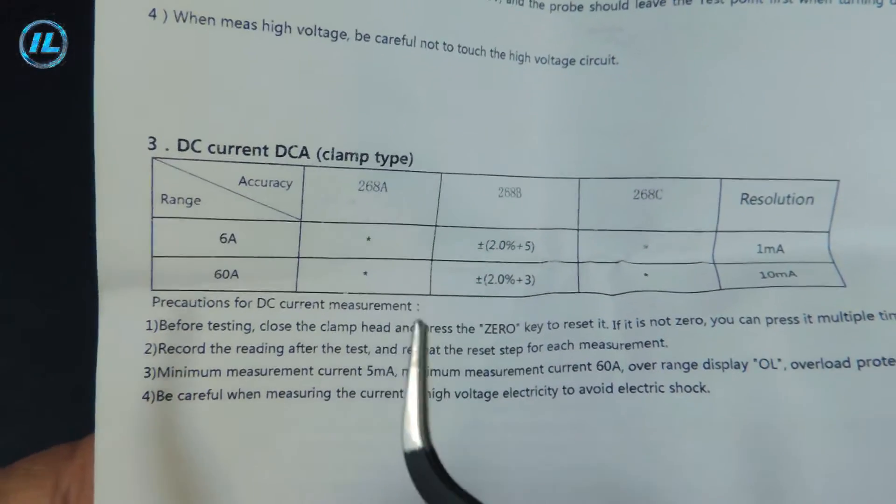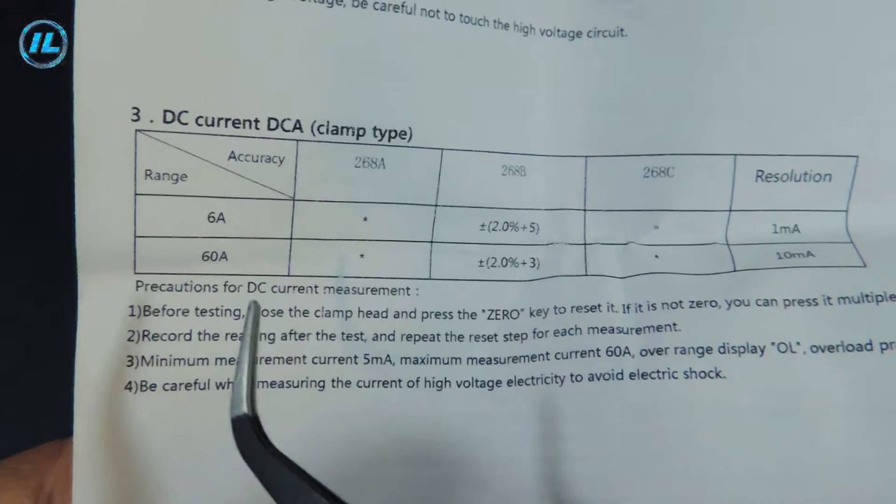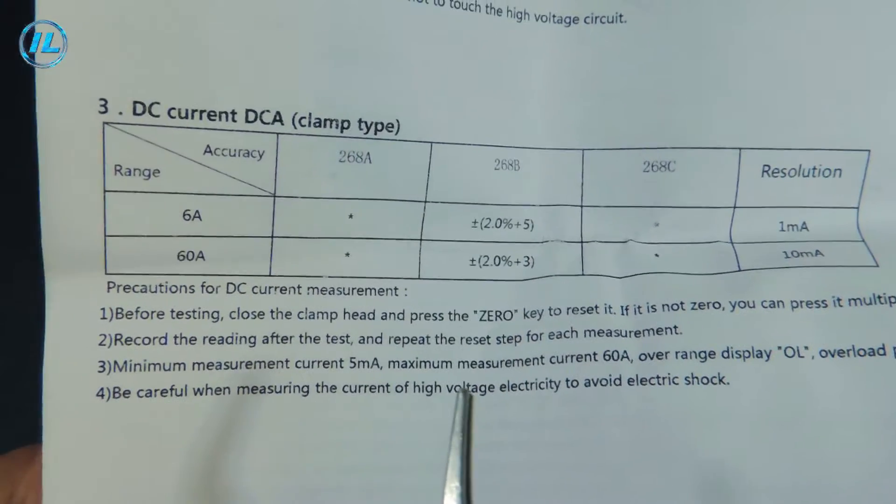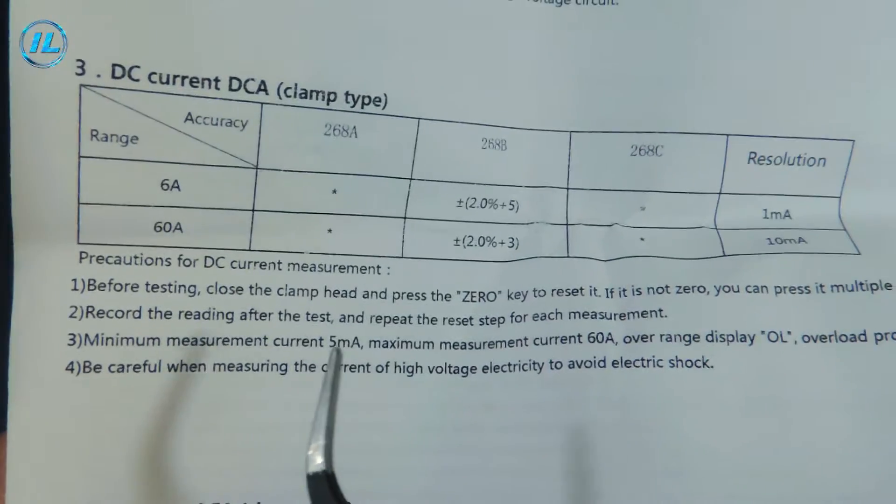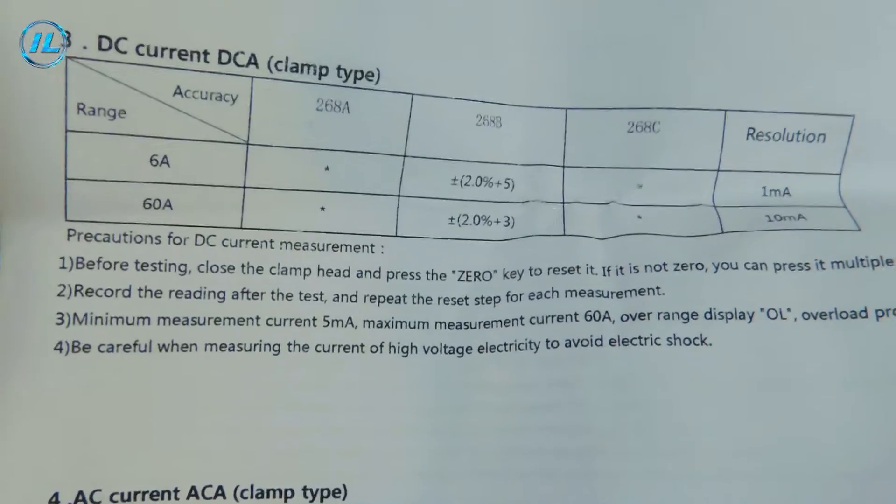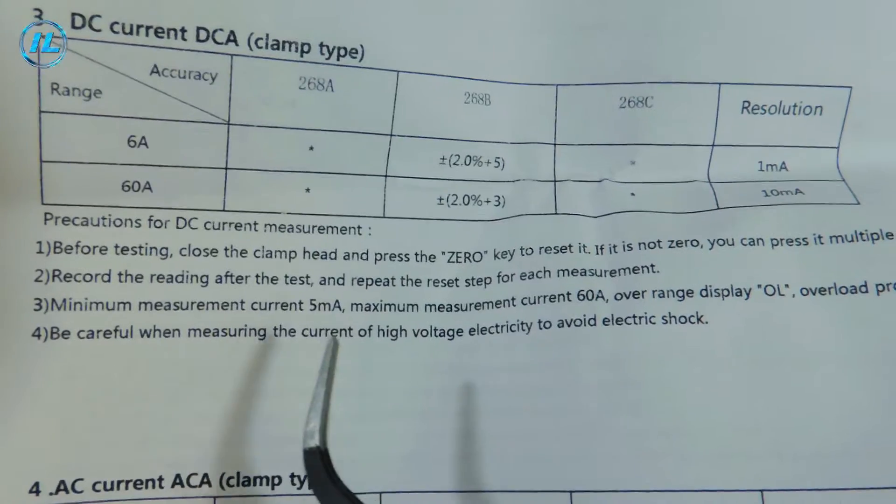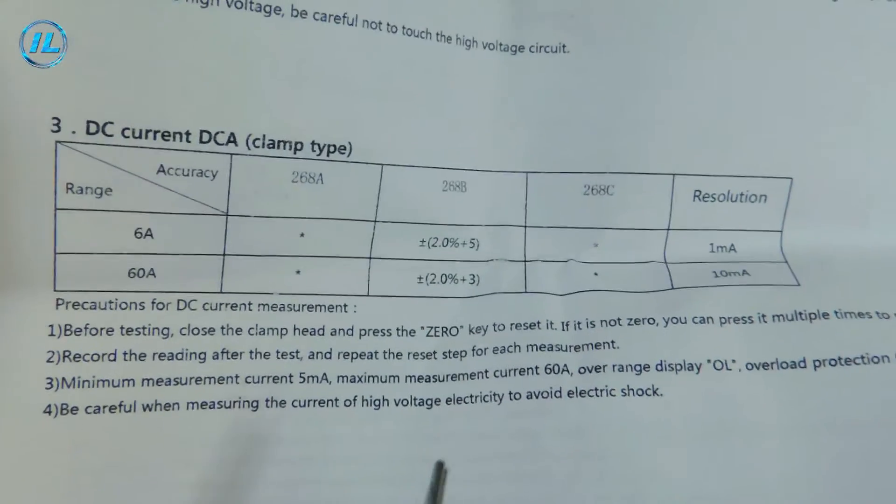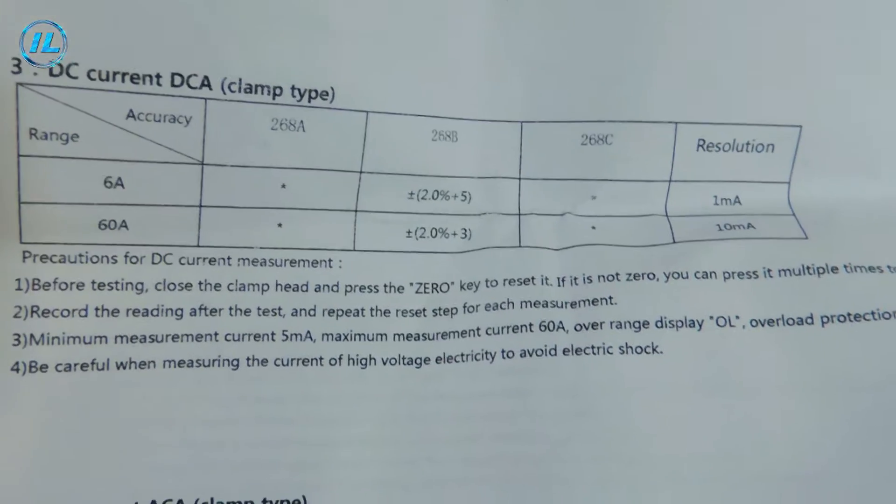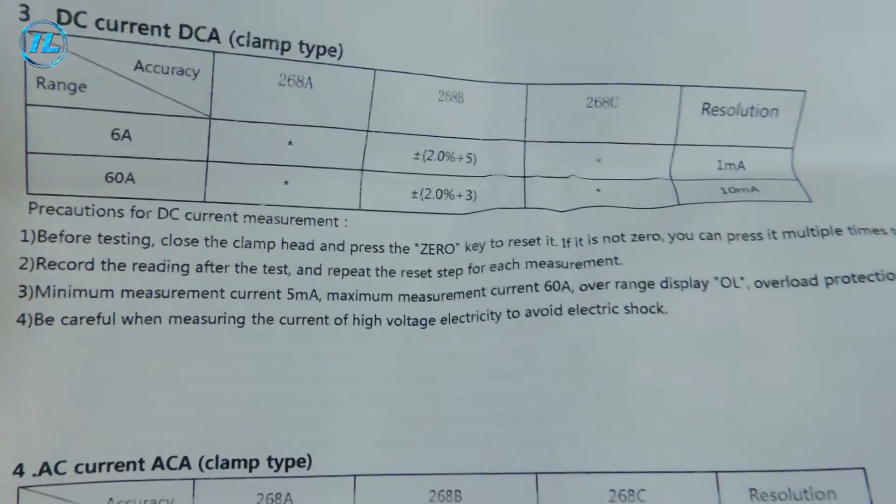Next, the measurement of direct current, up to 60 amps, the margin of error is 2%. And here is a very important feature of these current ticks. They are capable of measuring very small currents, starting from 5mA. Thanks to this, they can even be used to detect leakage currents. And this is a huge plus of this device.